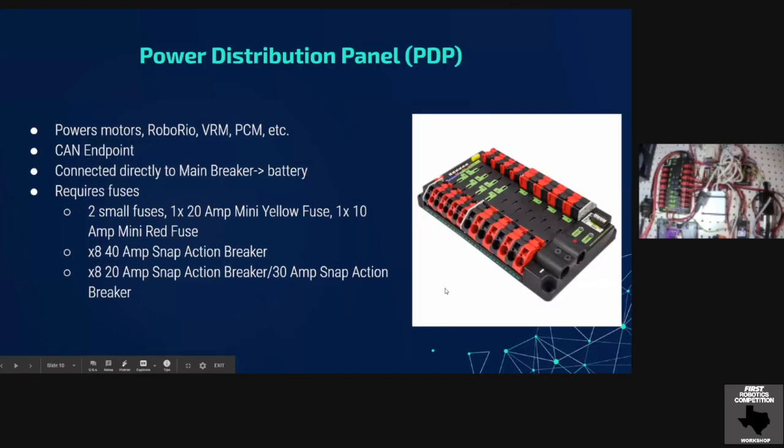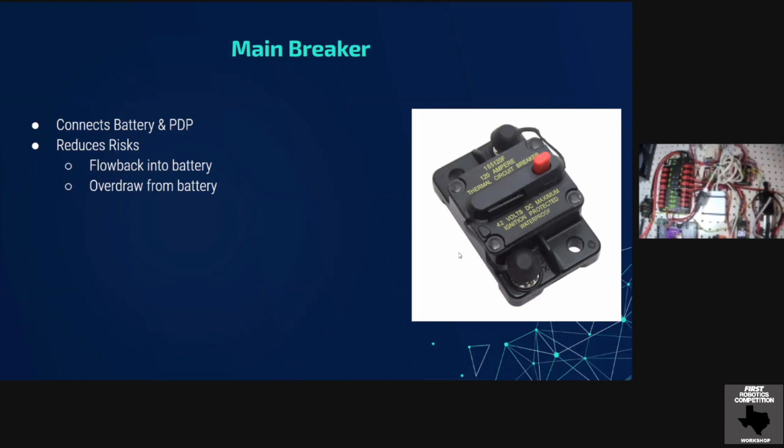So your next thing is your main breaker. Now your main breaker connects your battery to your PDP. The interesting thing about the main breaker, as opposed to the breakers that are on the PDP, is that the breaker is basically a switch. So that's what you use to switch your robot on and off. But if too much power is pulled from the battery, it will automatically switch your robot off. That is very rare for that to happen. But it does happen in the main breaker, aside from being an off switch, is basically a safety feature. It helps prevent flow back into the battery. So if for some reason power is being fed backwards into the battery, that could cause a fire. Additionally, it prevents overdraw from the battery. So significantly overdraw from the battery at one point, to the point where it could like melt your wires. The breaker prevents things like that. So you won't have those issues on your robot.